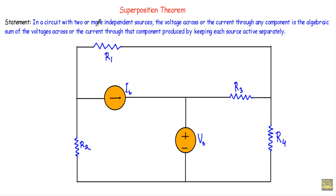The statement of Superposition Theorem: in a circuit with two or more independent sources, the voltage across or the current through any component is the algebraic sum of the voltages across or the current through that component produced by keeping each source active separately.